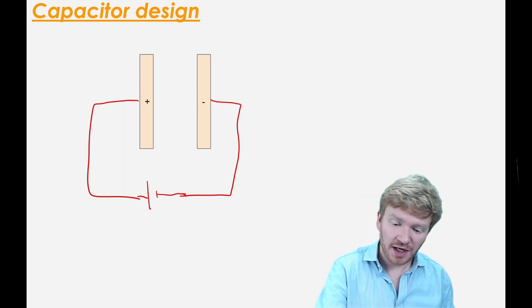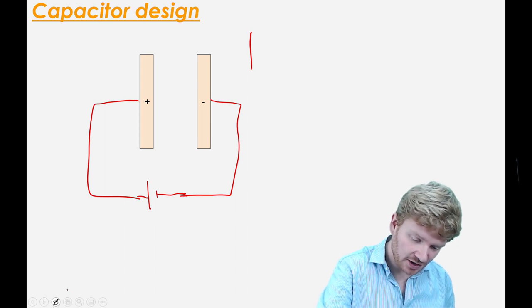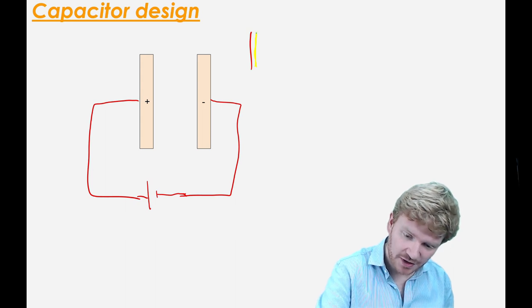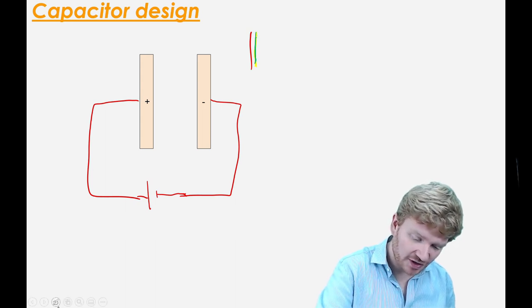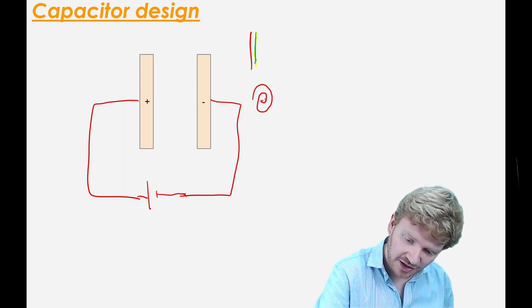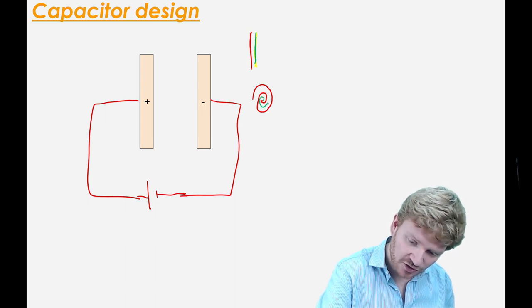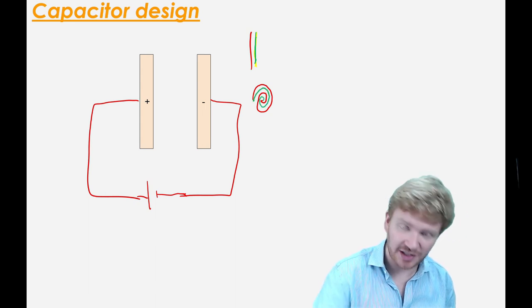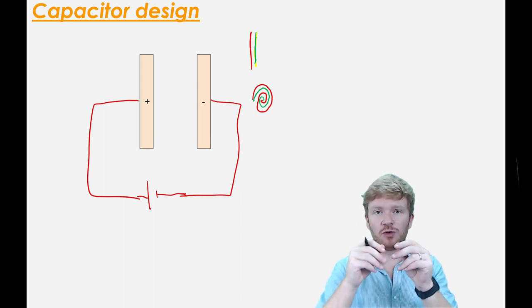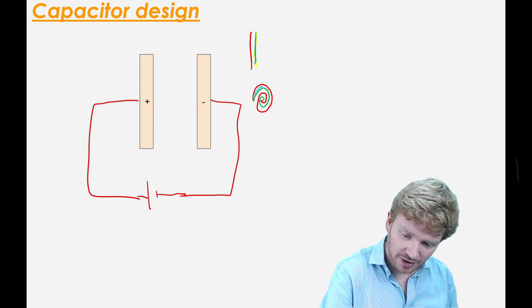These plates in practice can be very long. Here's plate one and here's plate two. What they tend to do in a real capacitor is roll those plates up against each other to make a plate sandwich, but you can still treat them as two parallel plates in front of each other. They roll them with a bit of an insulator in between so that they don't touch.